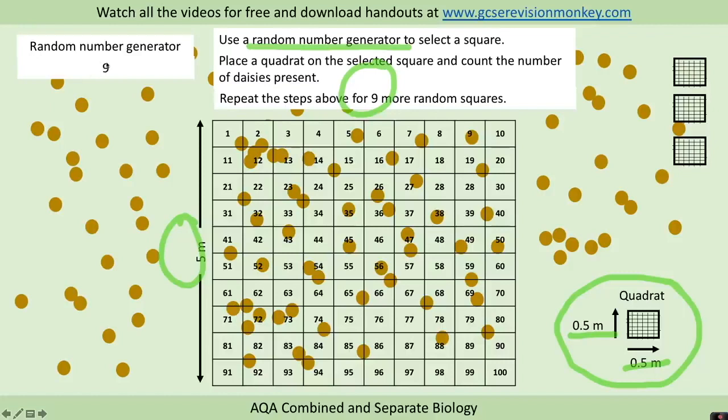So we might do 10 in total. So let's say our random number generator picked us out the number 9. What we do is we take our quadrat and we place that on square 9 and we count the number of daisies present. We would then repeat that for another square.